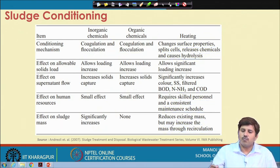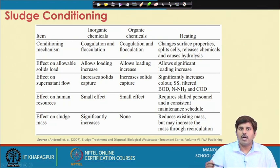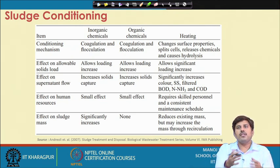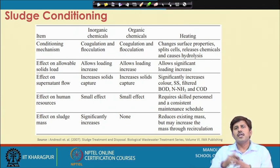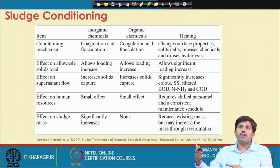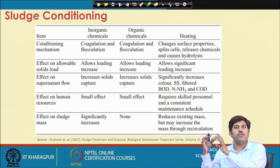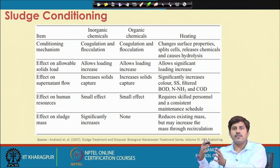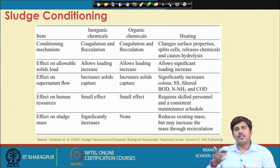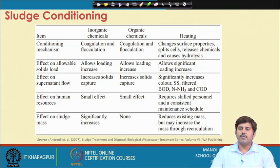To summarize the process sequence: we first thicken the sludge, then stabilize it through digestion — traditionally anaerobic digestion — then the digested sludge is conditioned, and once conditioned it is taken for dewatering, where majority of water is removed to produce a dry sludge cake. After that we can consider subsequent options such as disposal, reuse, or incineration. We will discuss the remaining processes in the next and last lecture of this week. Thank you for joining and see you in the next lecture.